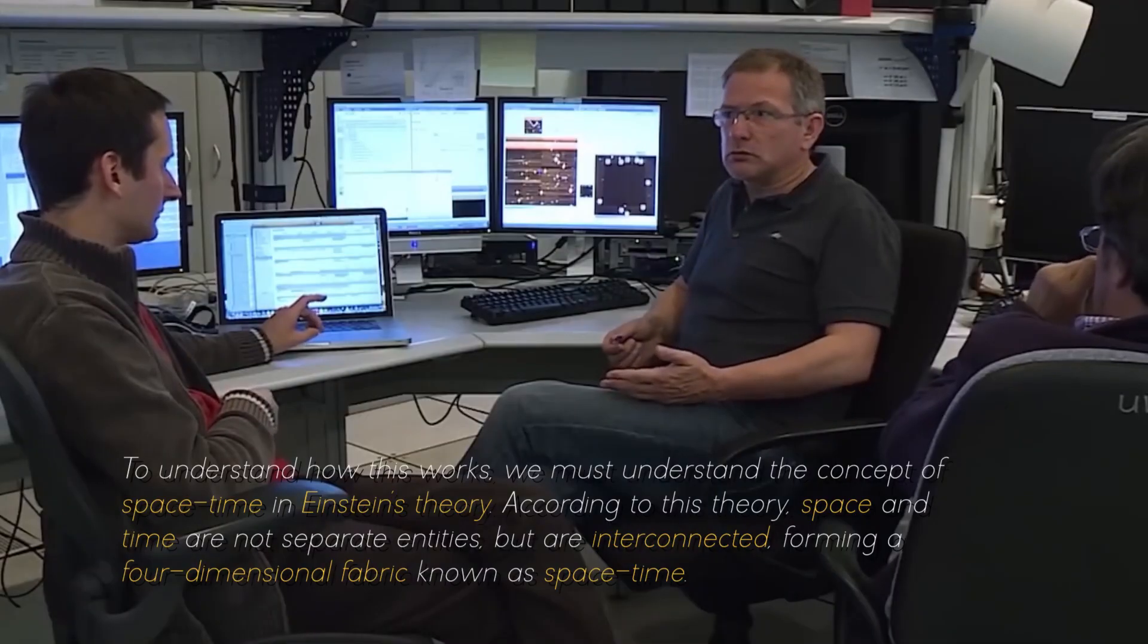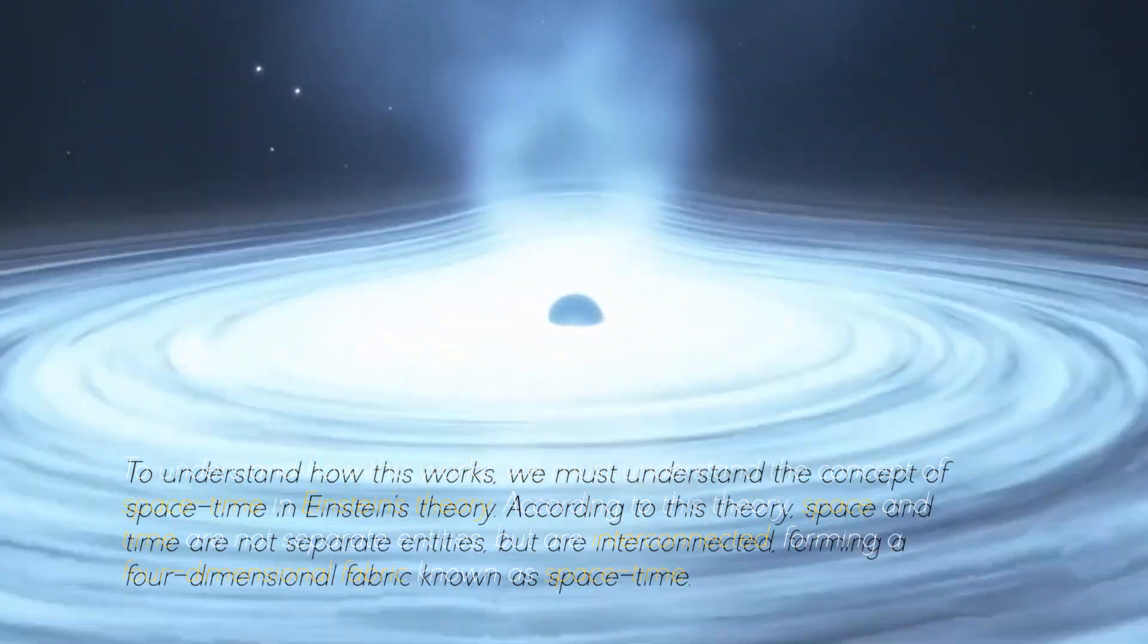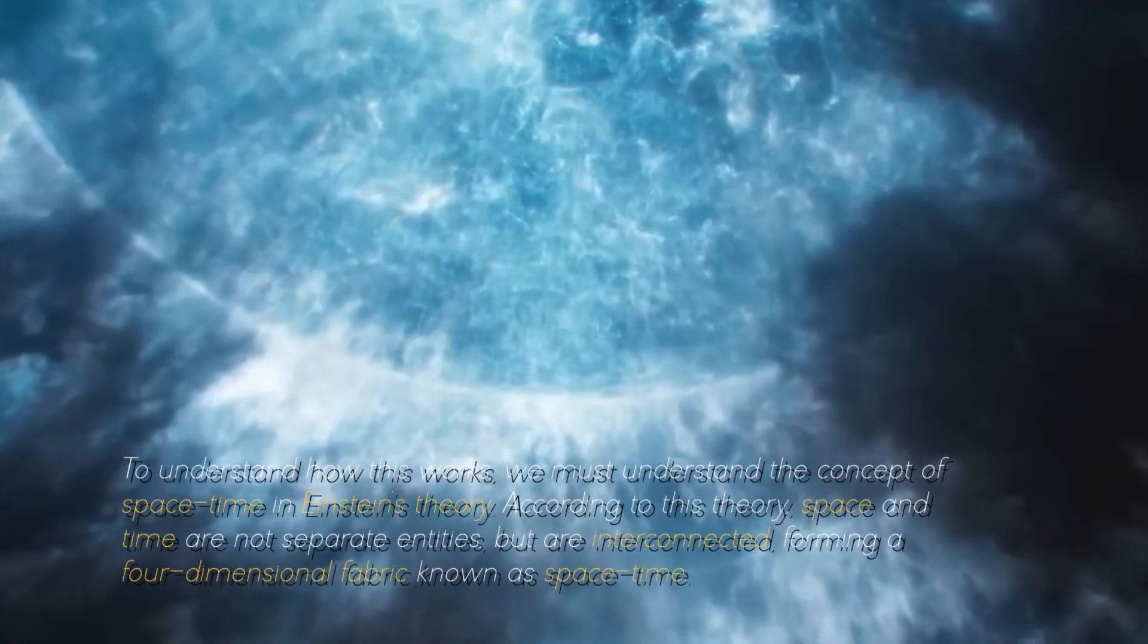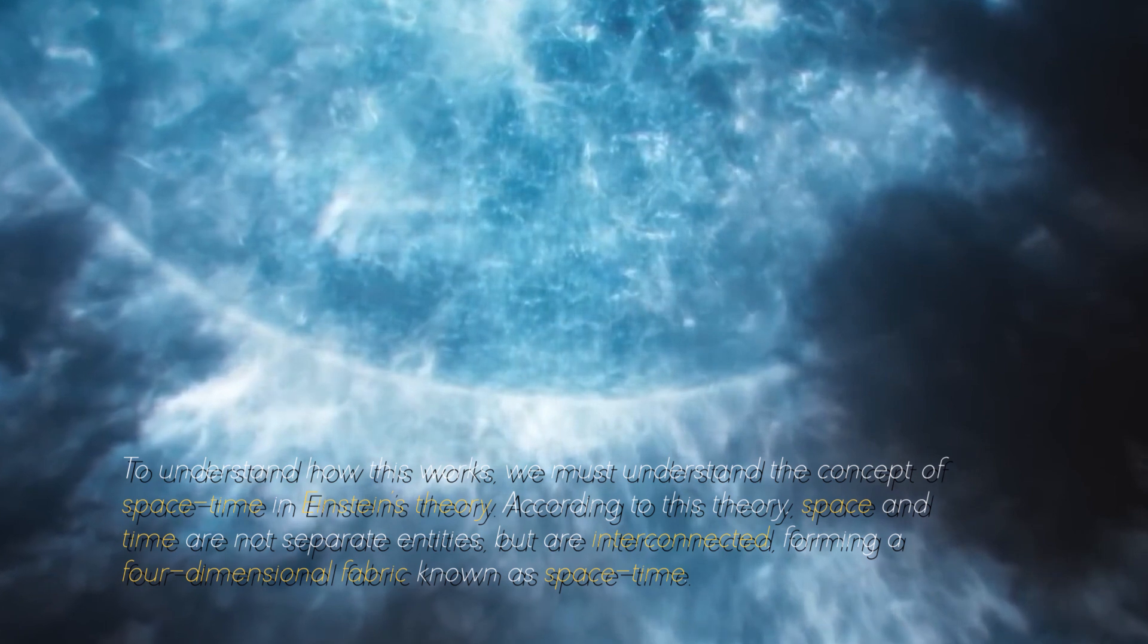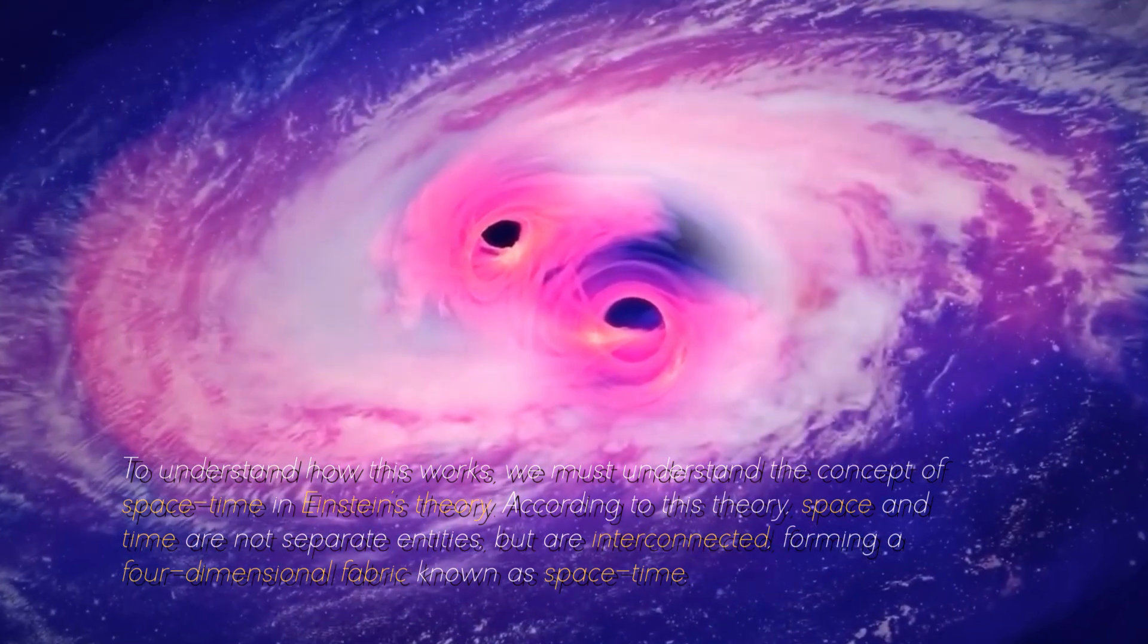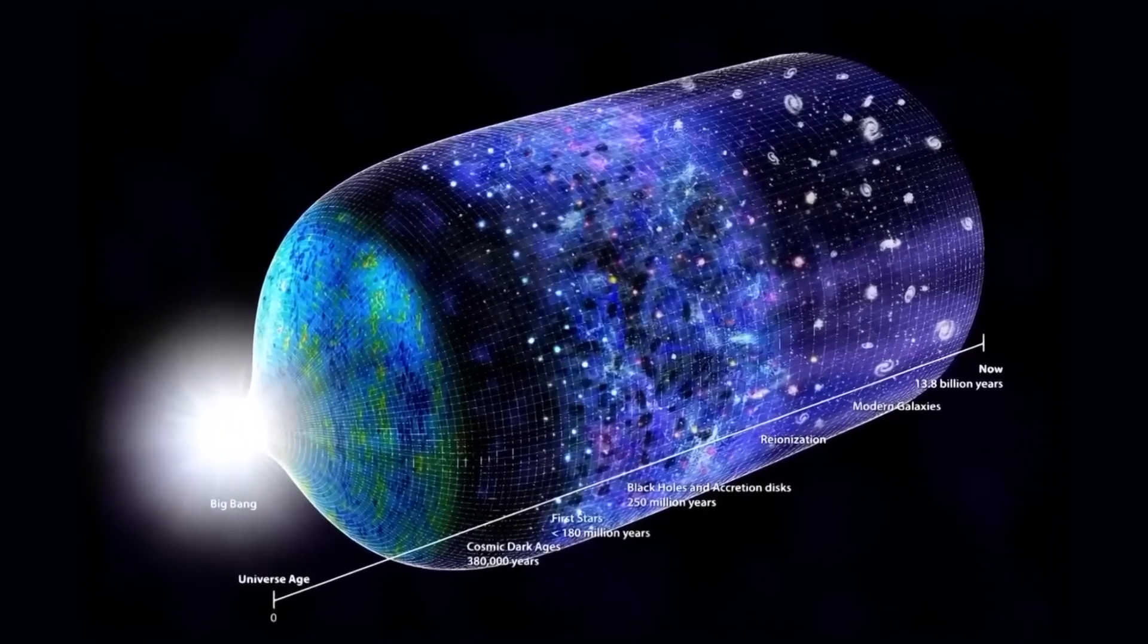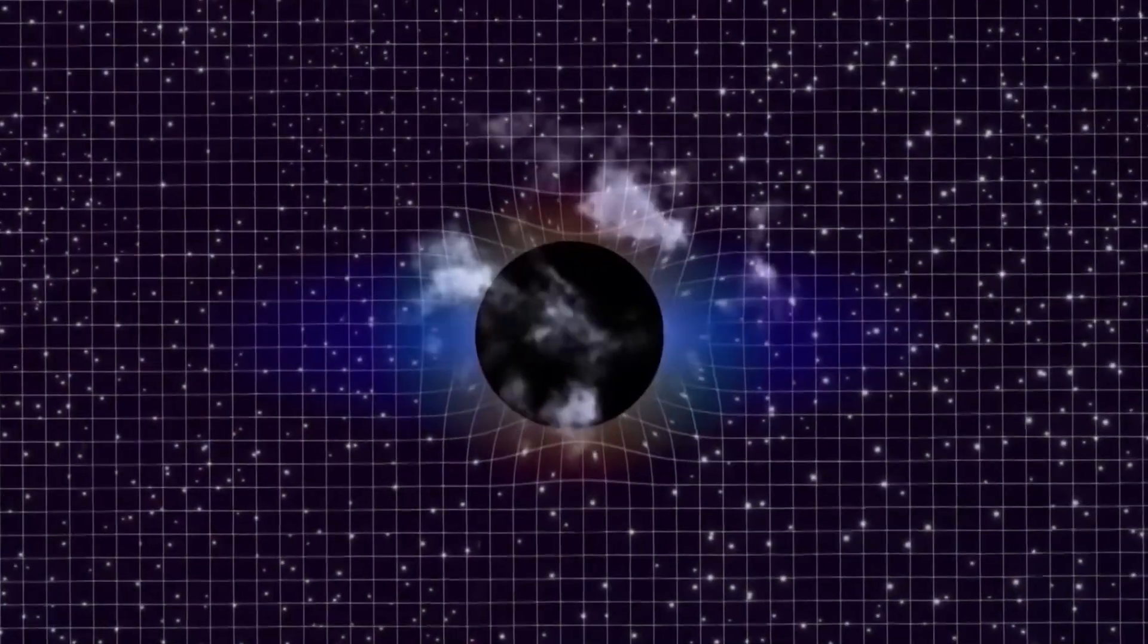To understand how this works, we must understand the concept of space-time in Einstein's theory. According to this theory, space and time are not separate entities, but are connected, forming a four-dimensional fabric known as space-time. Objects with mass warp space-time, creating a gravitational field that affects the motion of other objects.